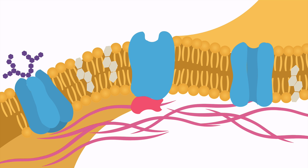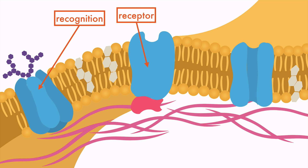There are three basic types of membrane proteins as well. Recognition proteins, which tell the cell who it is and where it is. Receptor proteins, which can pick up signals. And transport proteins, which can move chemicals in and out of the cell.